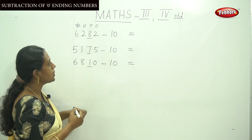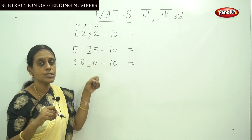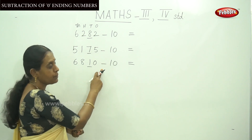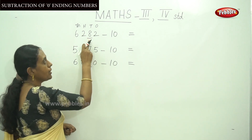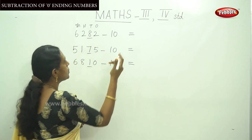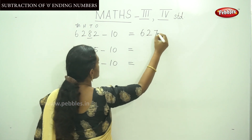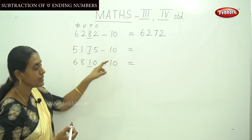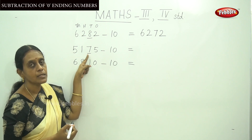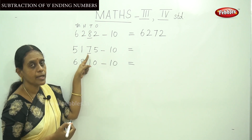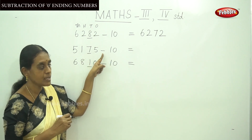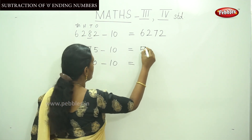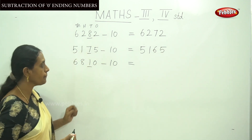It is an easy way — you should focus only on the tens place number. Here the tens place number is 8, so because of this subtraction you write the before number, that is 7. So write down 6272. Similarly for 5175 minus 10, focus on the tens place number that is 7, and write the before number, that is 6. So the answer will be 5165.